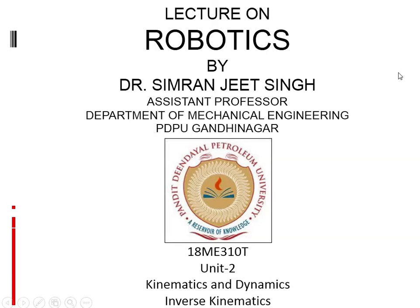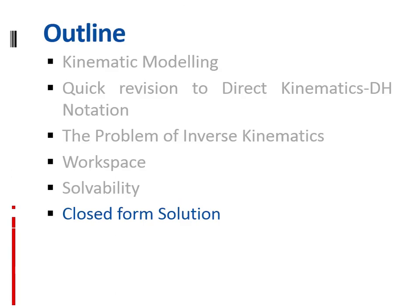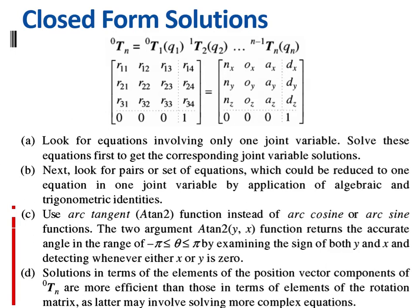Hello students, today we are going to complete the last part of kinematic modeling. We are going to discuss the algorithm for the closed-form solution for inverse kinematic modeling. We have already obtained a solution for direct kinematic modeling in the previous lectures using Denavit-Hartenberg notation, and today we are going to use that part also, in addition to an algorithm devised for solving the inverse kinematic problem.